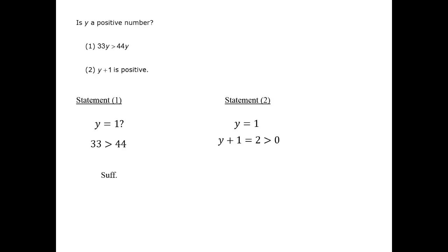However, there are other possibilities. For example, y could be minus 1 half. We know this is permitted because in such a case, y plus 1 would be 1 half, and that's positive. Therefore, this case fits with the parameters given to us by statement 2, which requires that y plus 1 is positive.